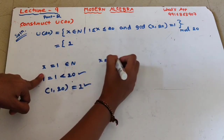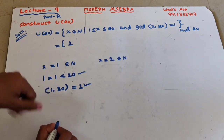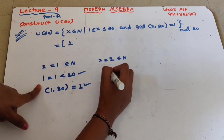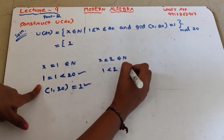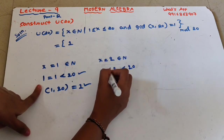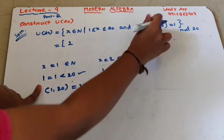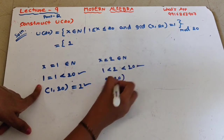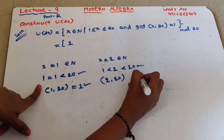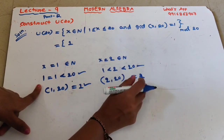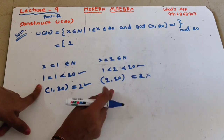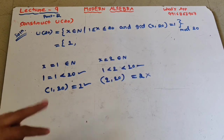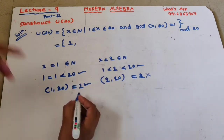Now take x = 2. Of course 2 belongs to the natural numbers, and 2 lies between 1 and 20, so the first condition is satisfied. But gcd(2, 20) = 2, not 1 — so the second condition fails. Therefore x = 2 does not belong to U(20).